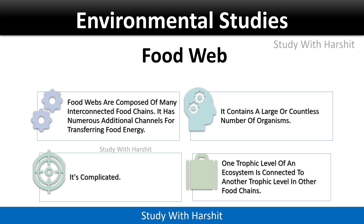Food web: Food webs are composed of many interconnected food chains. A food web has numerous additional channels for transferring food energy and contains a large or countless number of organisms. It is more complicated, as one trophic level of an ecosystem is connected to another trophic level in other food chains.